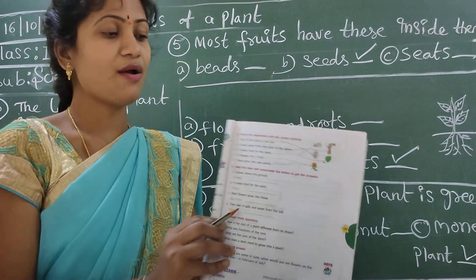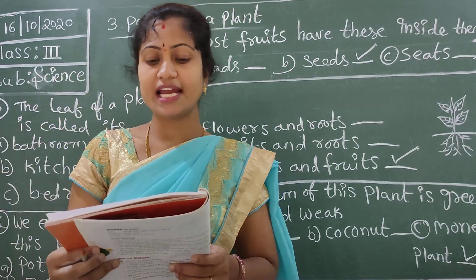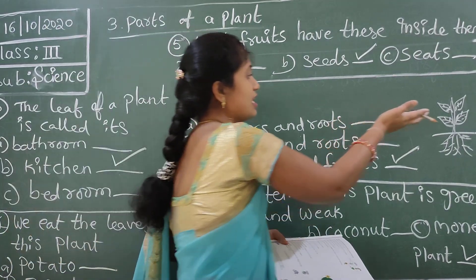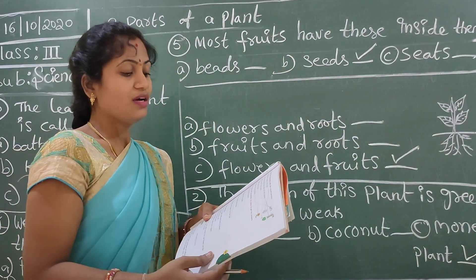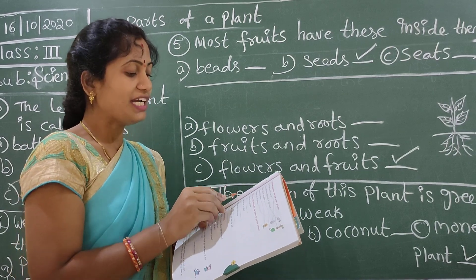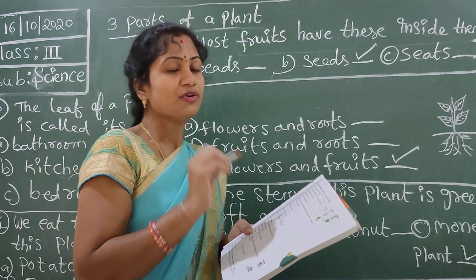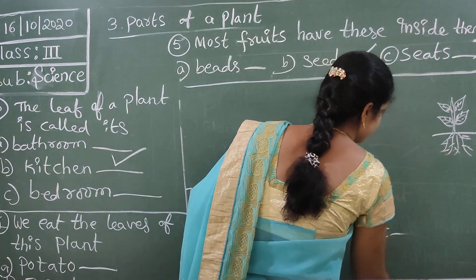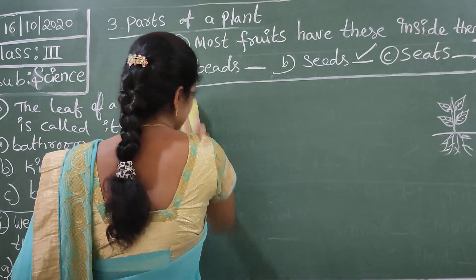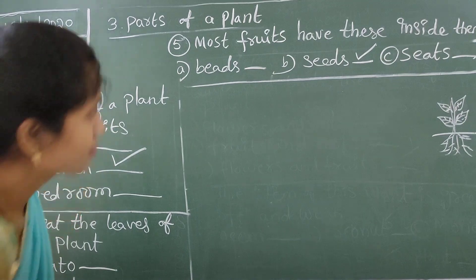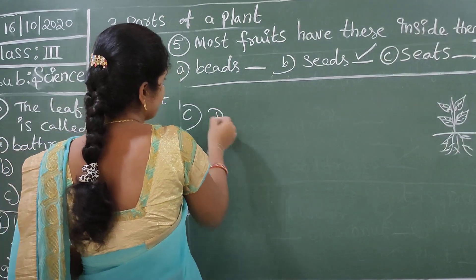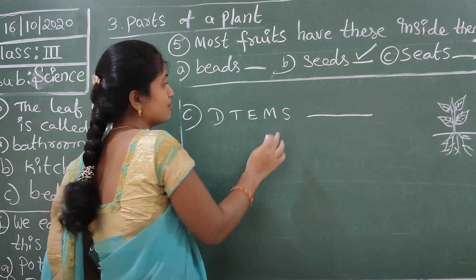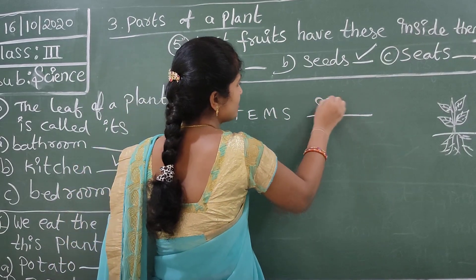You have to match like this. Now next section - read the clues and unscramble the letters to get the answers. It grows above the ground - the letters given are T-E-M-S. Unscramble: S-T-E-M. The answer is STEM. Write the correct word in capital letters only, because capital letters are given here.